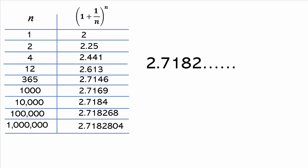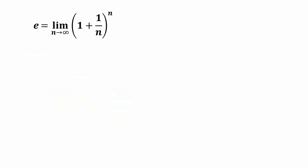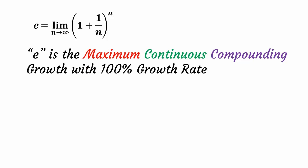As the value of n approaches infinity, the growth value is converging to 2.7182, and this value is our magic e. This formula is used in many mathematical derivations. We conclude e is the maximum continuous compounding growth with 100% growth rate over a unit time period.